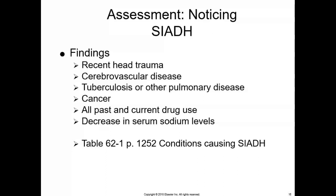Water retention, hyponatremia, and fluid shifts affect central nervous system function, especially when serum sodium falls below 115. The patient may have lethargy, headaches, hostility, disorientation, and changes in level of consciousness, progressing to decreased responsiveness, seizures, and coma. Assess deep tendon reflexes, which are usually decreased. Vital sign changes include a full and bounding pulse from increased fluid volume and hypothermia from CNS dysfunction. Water retention causes urine volume to decrease and urine osmolarity to increase, while plasma volume increases and plasma osmolarity decreases.